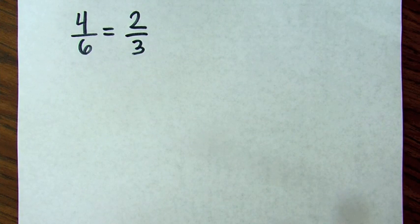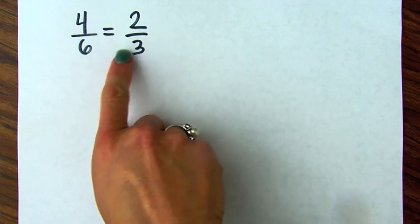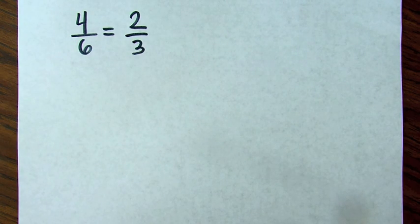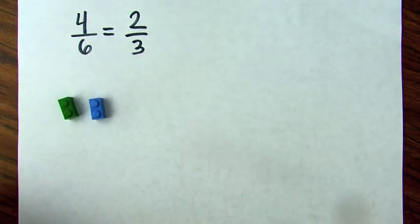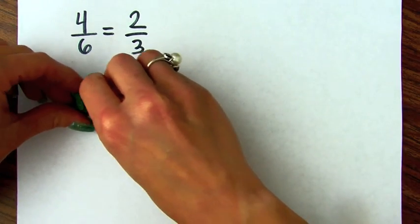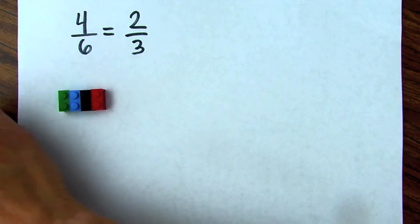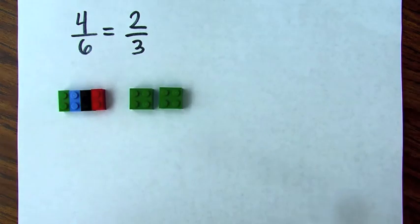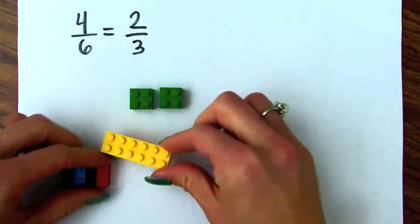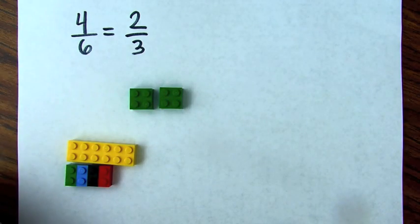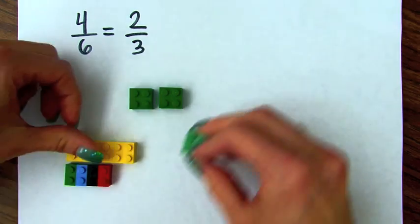Using these Legos, we're going to represent equivalent fractions. Four-sixths is equal to two-thirds. So first I need my sixths — remember, these little ones were the sixths. So I need four sixths. And I want to show that that's equivalent to two-thirds. Here are my two-thirds. Remember, we're using this as the whole unit. So that's four sixths and this is two-thirds.